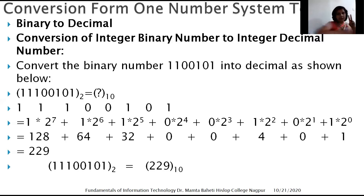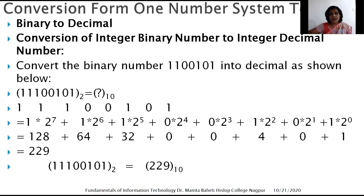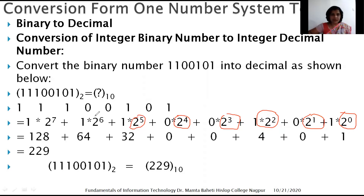We have the number 1 1 1 0 0 1 0 1. From right to left, assign 2⁰, 2¹, 2², 2³, 2⁴, 2⁵, 2⁶, and 2⁷ to each respective digit.